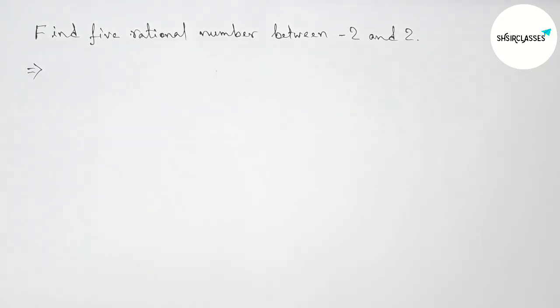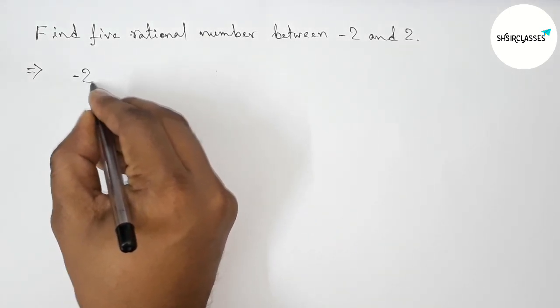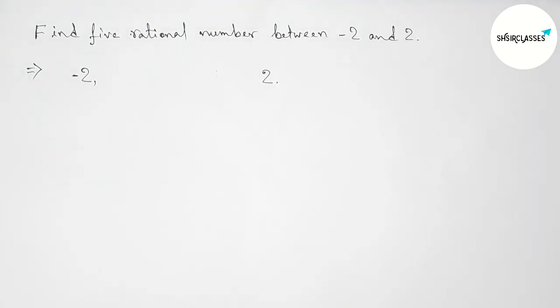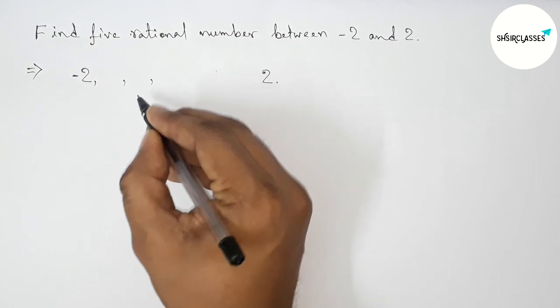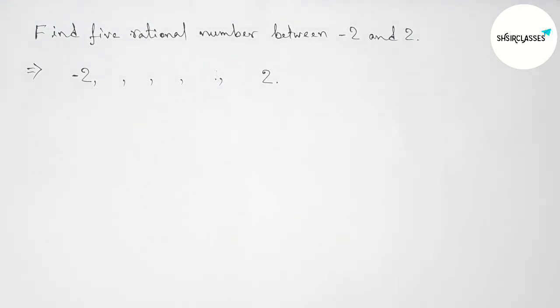First of all, let us solve this problem. Here between minus 2 and 2 we have to find five rational numbers. So first, taking five blank spaces to fill all the five rational numbers.